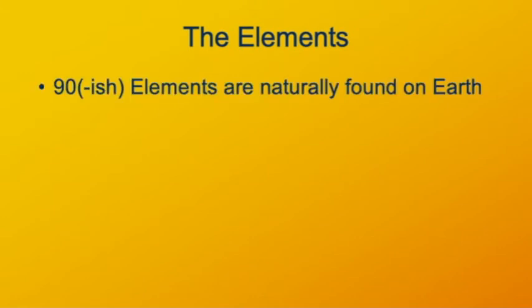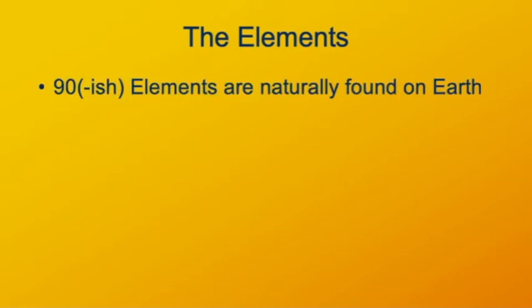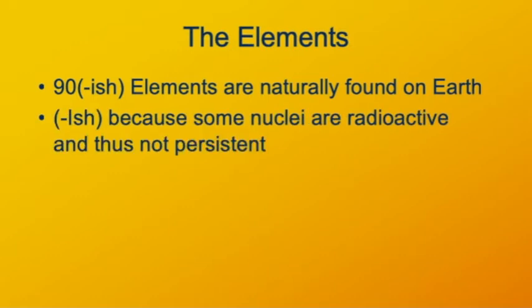There are about 90 elements found on Earth, and more that have been produced in the laboratory. There are very different amounts of the different elements in existence. There is more hydrogen in the universe than all the other elements combined, and more helium than all the rest combined. Some elements form much more readily than others, and many nuclei decay soon after they form.